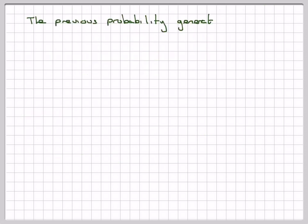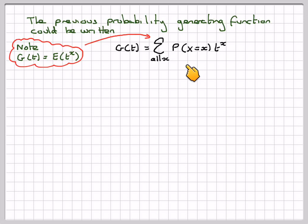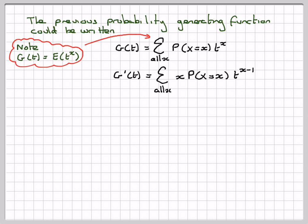The probability generating function can be written as G(T) = Σ P(X = x) · T^x for all x. Note that this is actually the same as the expectation of T^X, so the probability generating function equals E(T^X). Therefore G'(T) = Σ x · P(X = x) · T^(x-1), where you bring the x down in front when differentiating.